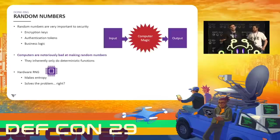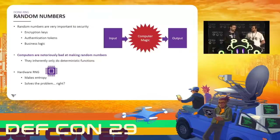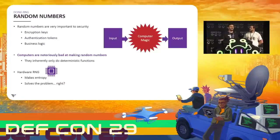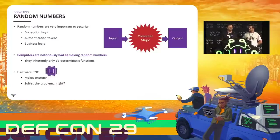Before we talk much about random number generators, let's talk first about random numbers. Random numbers are kind of a stand-in for just about anything a computer might need — obviously numbers are how computers work. A random number generator doesn't necessarily have to make numbers exactly; we're talking about encryption keys, authentication tokens, and lots of other things covered under business logic.